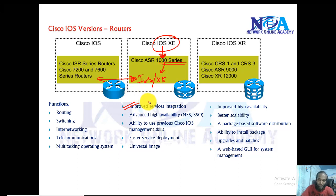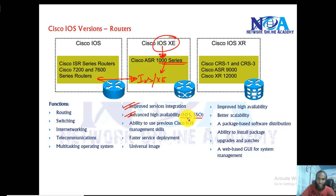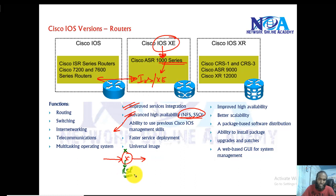It was first run in the ASR 1000 series routers and supports advanced high availability options like non-stop forwarding and stateful switchover failover. These features ensure that if a router is forwarding traffic and there is some failure, redundant processors allow traffic to switch over, minimizing or eliminating downtime.